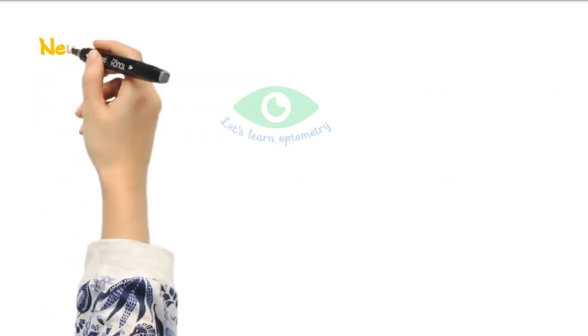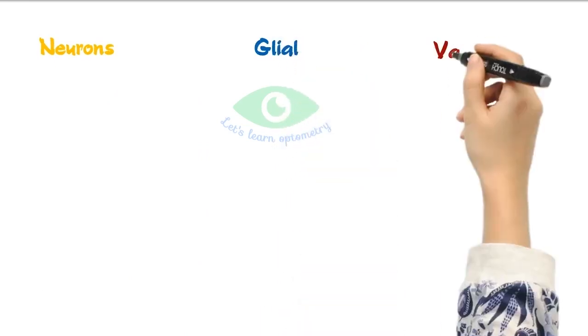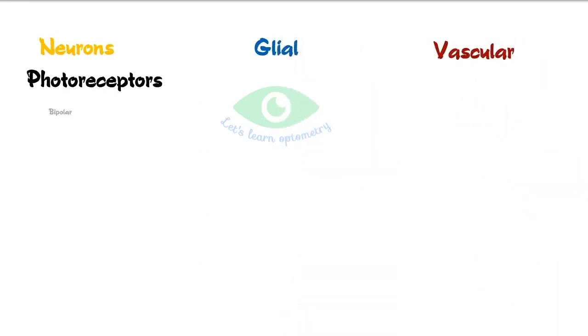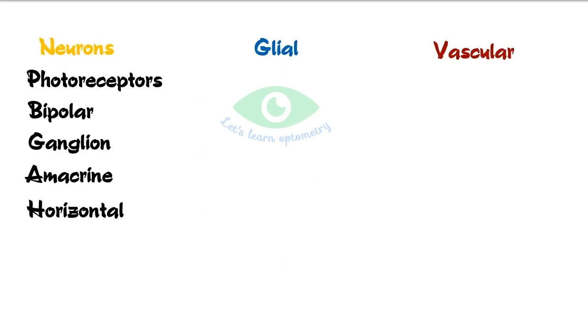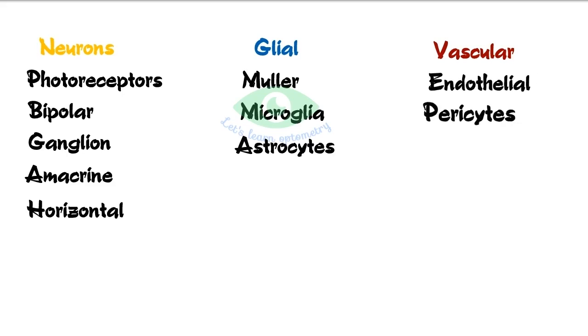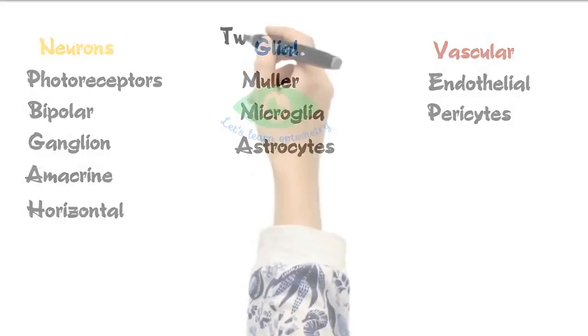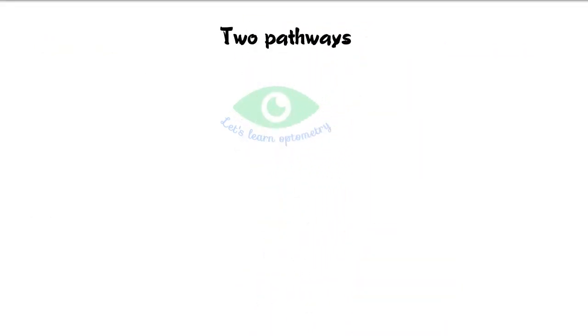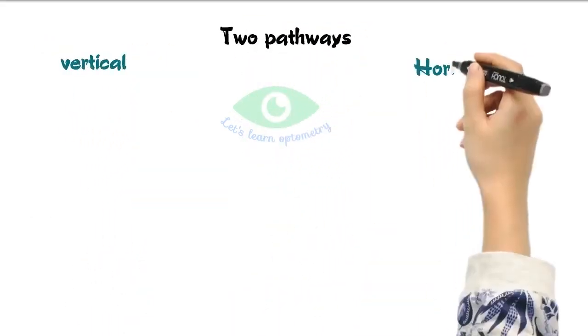The neurosensory retina contains three classes of cells: neurons, glial cells, and vascular cells. The neurons include photoreceptors, bipolar cells, ganglion cells, amacrine cells, and horizontal cells. The glial cells include Muller cells, microglial cells, and astrocytes. The vascular cells include endothelial cells and pericytes.